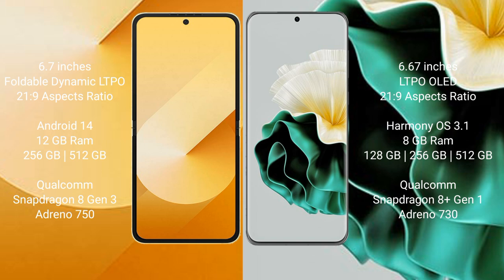Samsung Galaxy Z Fold 6 comes with 12GB RAM and 256GB or 512GB internal storage, a Qualcomm Snapdragon 8 Gen 3 processor, and GPU Adreno 750. Huawei P60 comes with 8GB RAM and 128GB, 256GB, or 512GB internal storage, a Qualcomm Snapdragon 8 Gen 1 processor, and GPU Adreno 730.